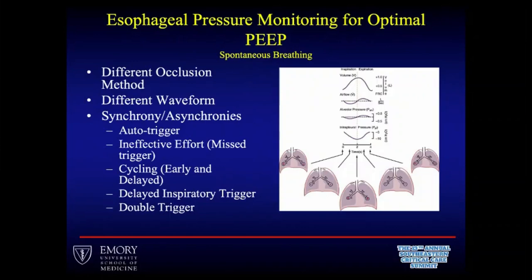With spontaneous breathing, a different occlusion method is used to verify placement. The waveform changes accordingly. Asynchrony patterns you may detect include: auto-triggering — the machine fires when the patient isn't trying to breathe; ineffective effort — the patient tries to breathe but the machine doesn't respond; cycling issues — the breath ending too early or too late; delayed triggering — the patient works hard before the machine recognizes the effort; and double triggering — the patient takes a breath, the machine stops, then the patient immediately inhales again. With the catheter in the thoracic cavity, you may detect asynchrony that doesn't appear on the airway pressure waveform alone.